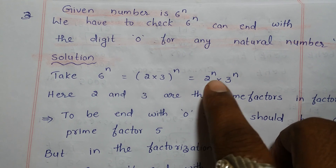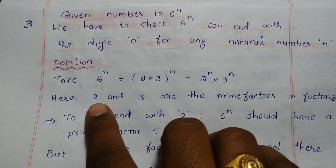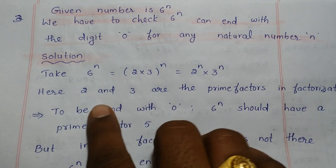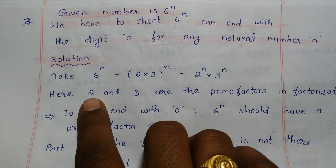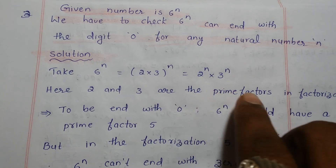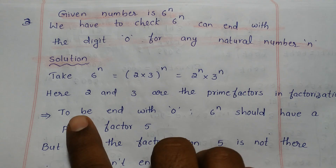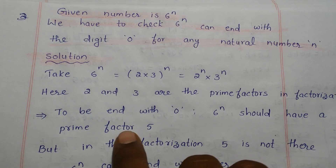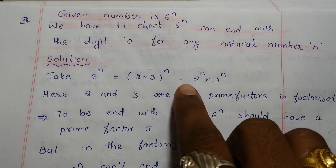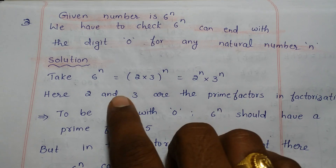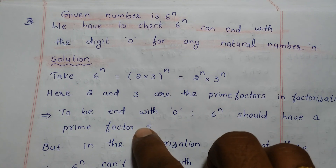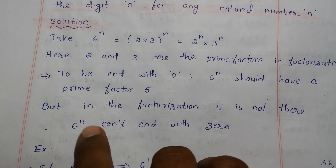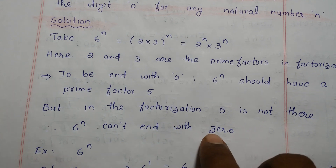Observe the factors here: 2 and 3 are the only prime factors in this factorization. To end with 0, 6 to the power of n should have 5 as a prime factor. But in our factorization, the prime factors are only 2 and 3 — 5 is not present. Therefore, 6 to the power of n cannot end with 0.